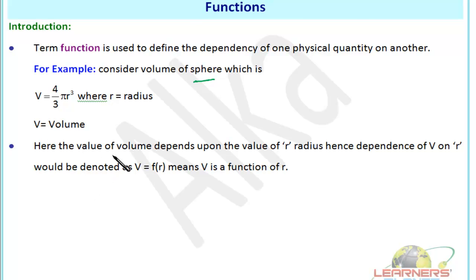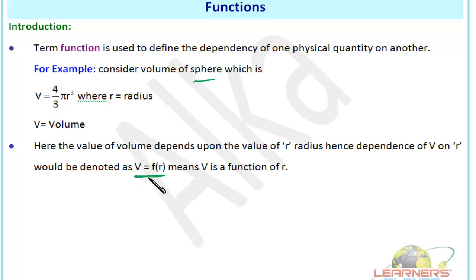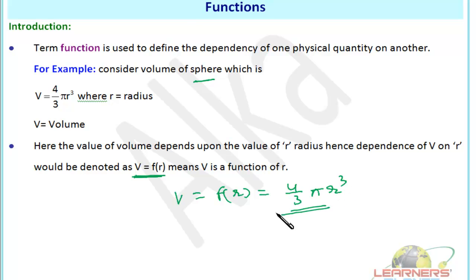So we can say that V is a function of r, meaning V = f(r). The value of V depends upon the value of r. This is represented as V = f(r) = (4/3)πr³. Here r is the independent variable and V (or f) is the dependent variable.